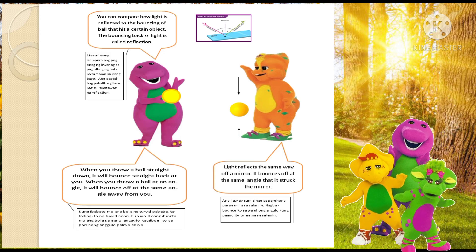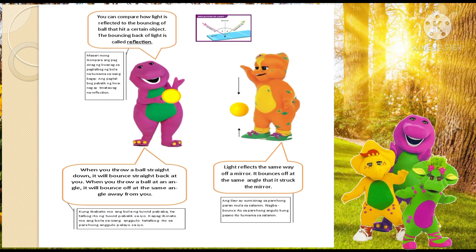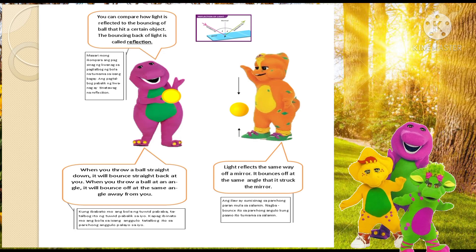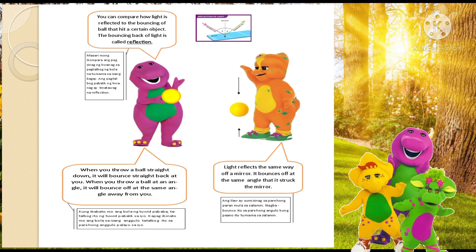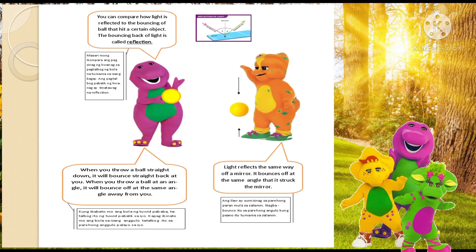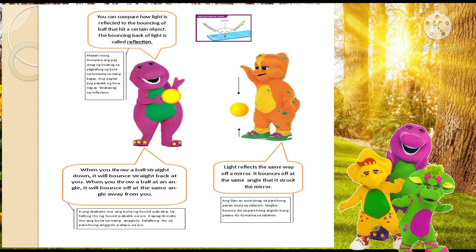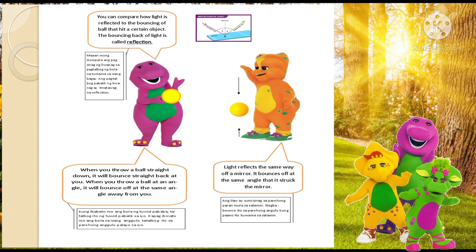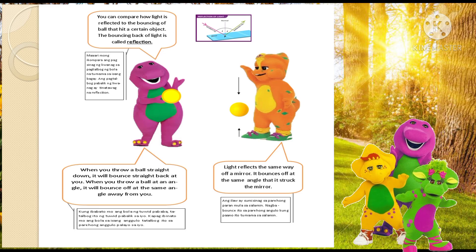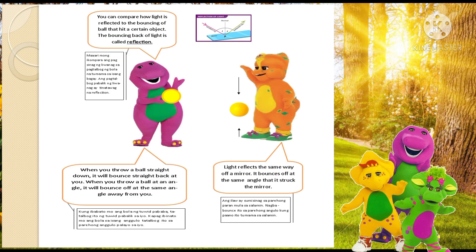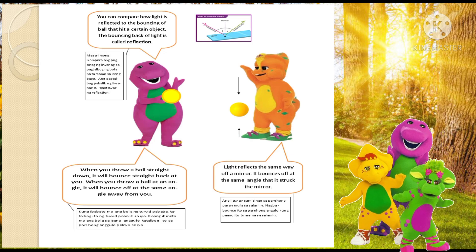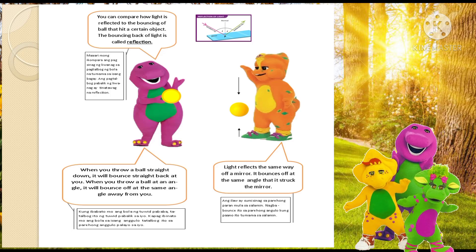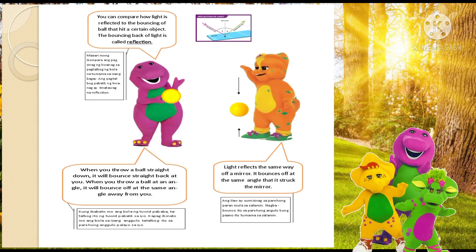You can compare how light is reflected to the bouncing of a ball that hits a certain object. The bouncing back of light is called reflection. When you throw a ball straight down, it will bounce straight back at you. When you throw a ball at an angle, it will bounce off at the same angle away from you. Light reflects the same way off a mirror — it bounces off at the same angle that it struck the mirror.